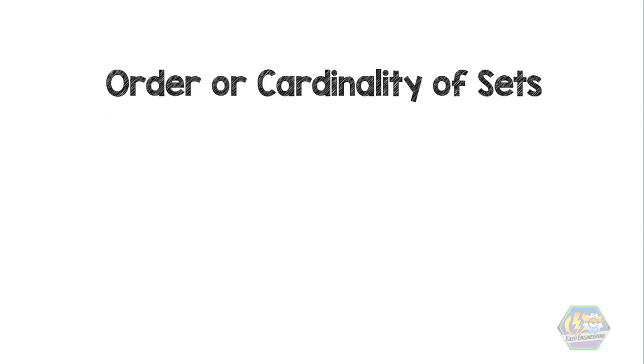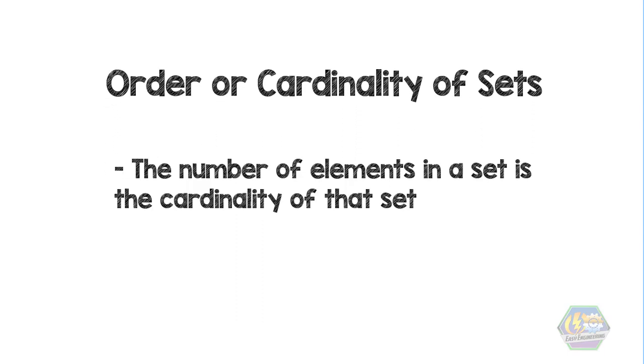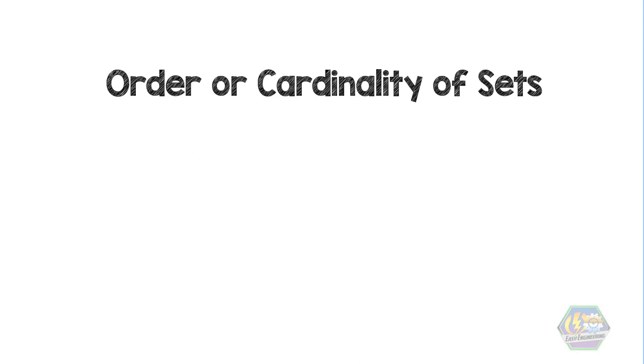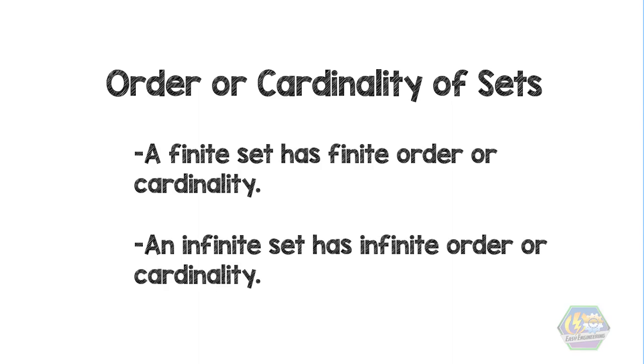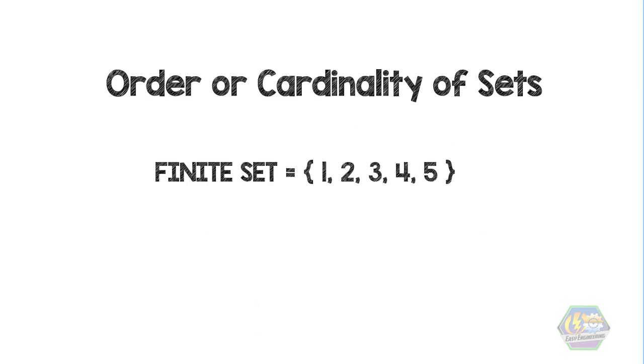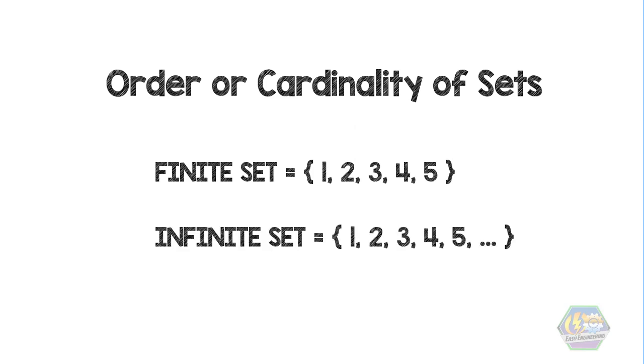Now let's talk about the order or the cardinality of sets. The number of elements in a set is the cardinality of that set. The cardinality of the set A is often notated as the symbol or read as n of A. A finite set has a finite order or cardinality. An infinite set has an infinite order or cardinality. For finite sets, the order or cardinality is the number of elements. For infinite sets, all we can say is that the order is infinite.